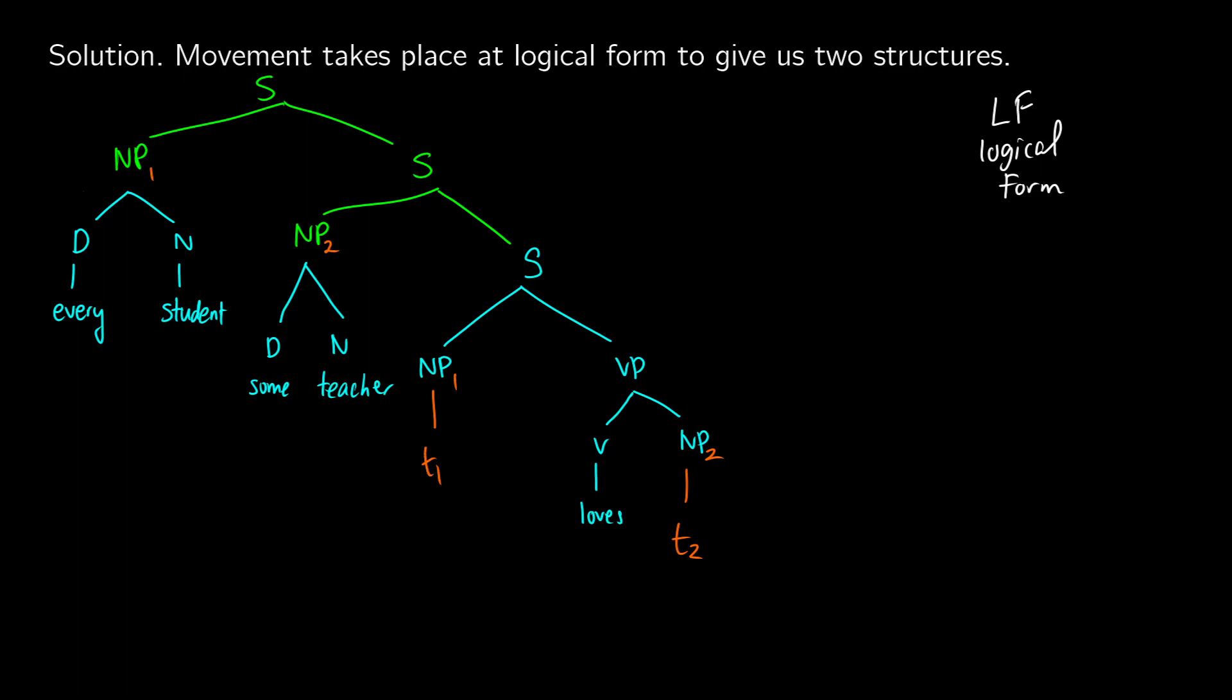So now, in terms of our predicate logic translation, we get a nice match here, we get the for all x, sx, then here we get for some teacher, so there exists a y such that ty. And then in this case, for t1 loves t2, we know the t1 is x, the t2 is y, so then we could get our lxy there. And there's another even shorter abbreviation form for your predicate logic translation, but this is just a nice way that we can do logical form.